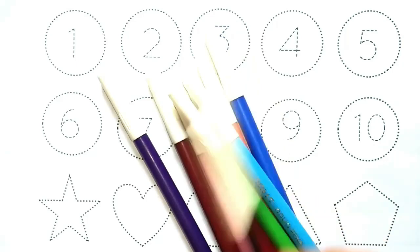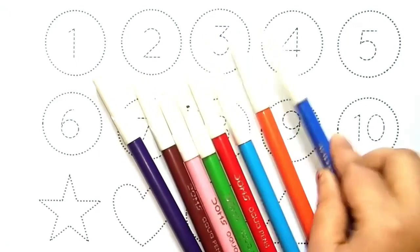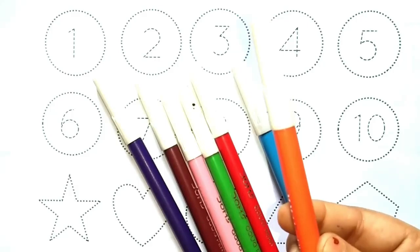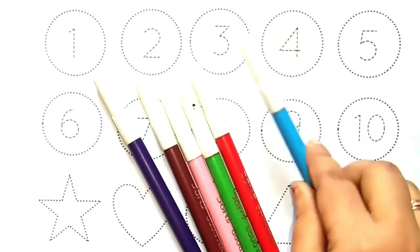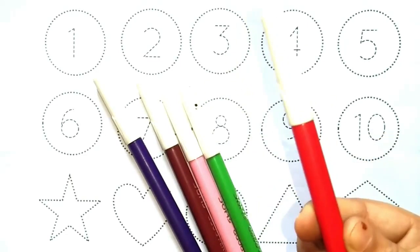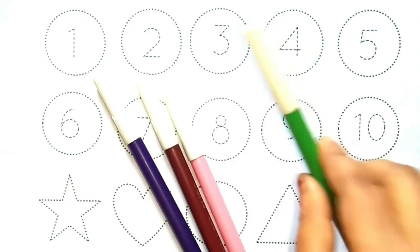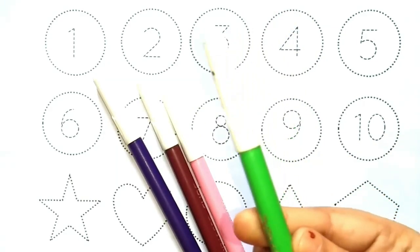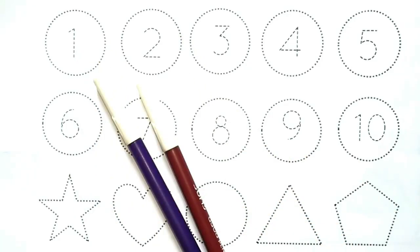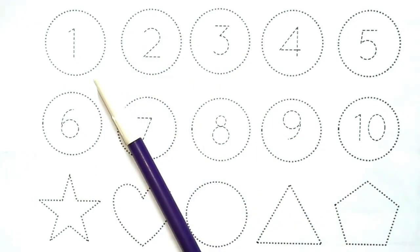Let's learn colors name. Red color, black color, blue color, orange color, sky blue color, red color, light green color, pink color, brown color, purple color.